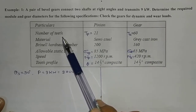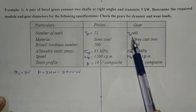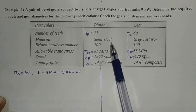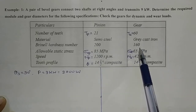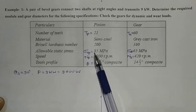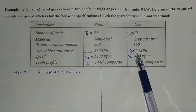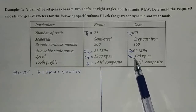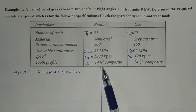The given data: number of teeth on pinion Tp is equal to 21, number of teeth on gear Tg is equal to 60. Material of the gear is gray cast iron and material of the pinion is semi steel. BHN for pinion is 200 and for gear is 160. Allowable static stress sigma_op is 85 MPa, sigma_og is 55 MPa. Speed of pinion Np is 1200 rpm, speed of gear Ng is 420 rpm. Tooth profile phi is 14.5 degree composite.